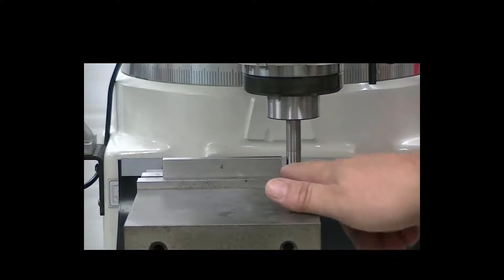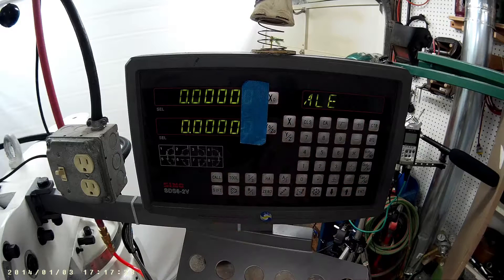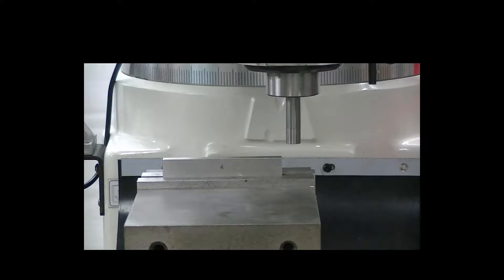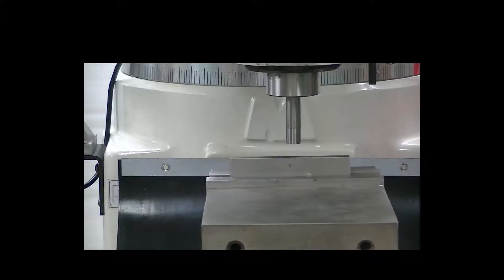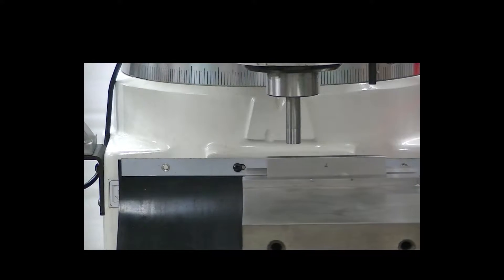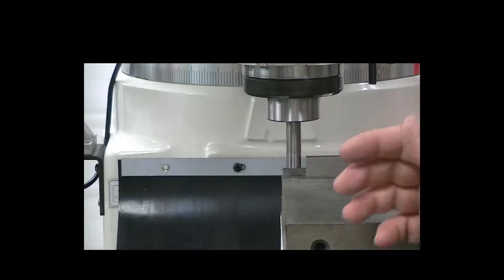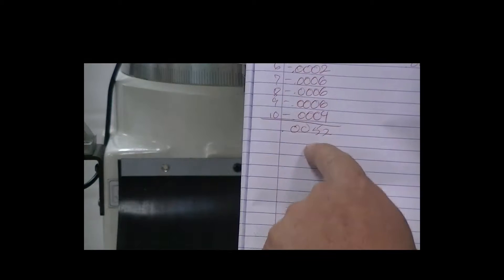And the object was to pick up this edge, zero the indicator or the digital readout, and then lift up and go all the way to this edge, four inches away, come down and pick up the edge. That should have been four and a half inches. And what we did was we marked down the error from that.